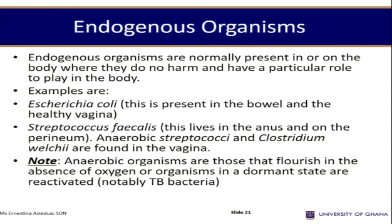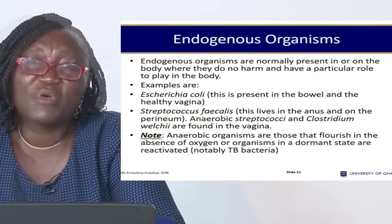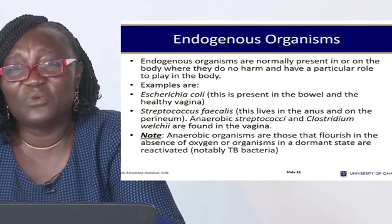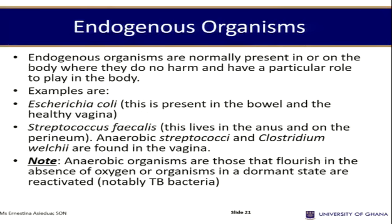For example, E. coli is in the bowel where it causes no harm, but if it finds its way into the vagina it causes infection. Similarly, coccobacilli live in the anus without problems, but if they extend into the vagina they cause puerperal sepsis. Anaerobic organisms flourish in the absence of oxygen; when dormant organisms are reactivated — as immunity drops during the stress of labor — they rise during the puerperium and cause sepsis.